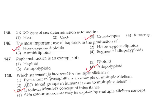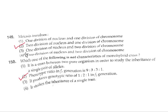Question 148: Which statement is incorrect for multiple allelism? Option 3 — it follows Mendel's concept of inheritance — is incorrect, as multiple allelism does not follow this. Question 149: Meiosis involves two divisions of the nucleus and one of the chromosome. So the correct answer is option 2.